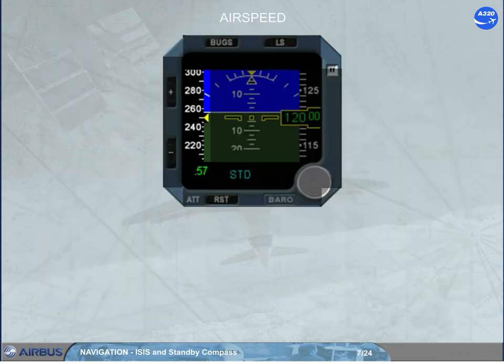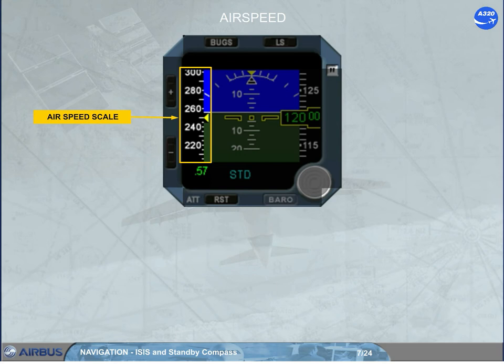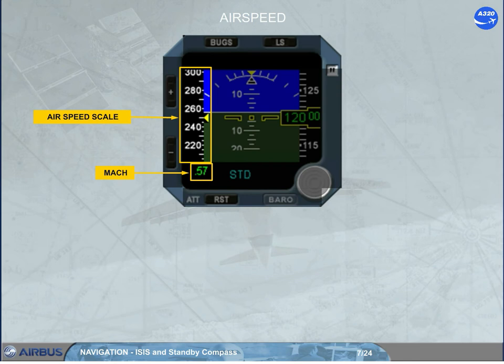The airspeed scale moves in front of a fixed yellow triangle indicating the airspeed. Note the scale has a white mark every 5 knots when below 250 knots, and every 10 knots when above 250 knots. Like on the PFD, the MOC indication is displayed only if it is above MOC 0.5.